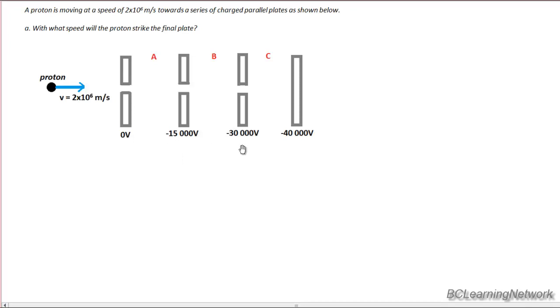Negative 15,000 volts, negative 30,000 volts, negative 40,000 volts. And what we want to calculate is how fast the proton strikes the final plate.